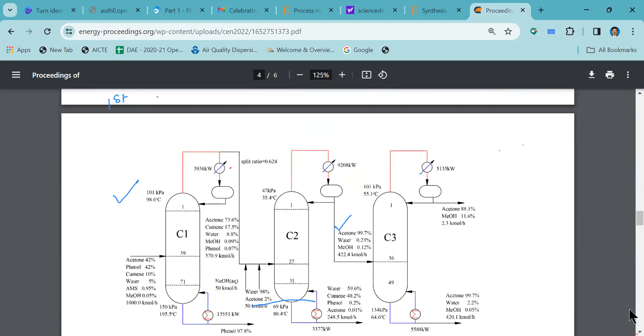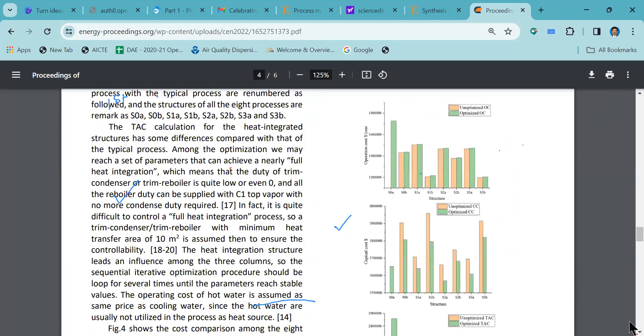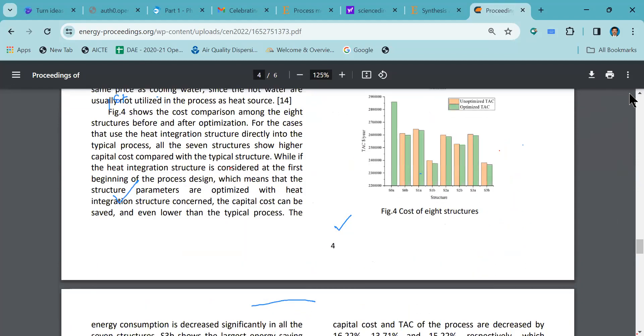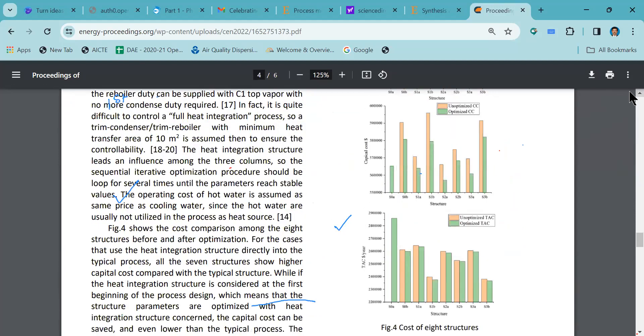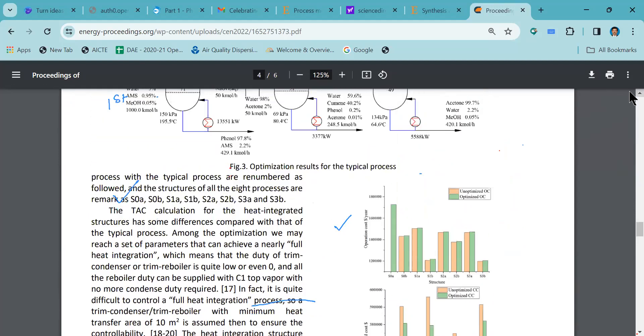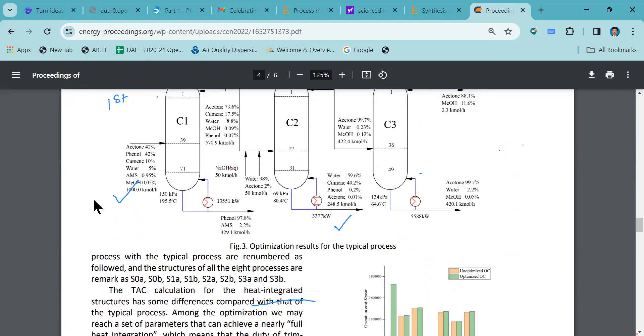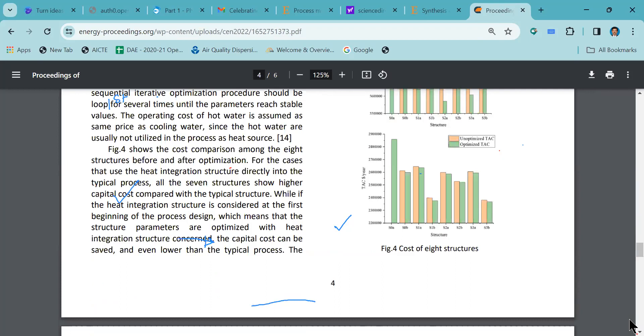Let us see one more figure. There is figure three which shows optimization results for the typical process. That means they might have adopted certain things and they are trying to give the results. Likewise, after going through these figures, try to go through the tables.